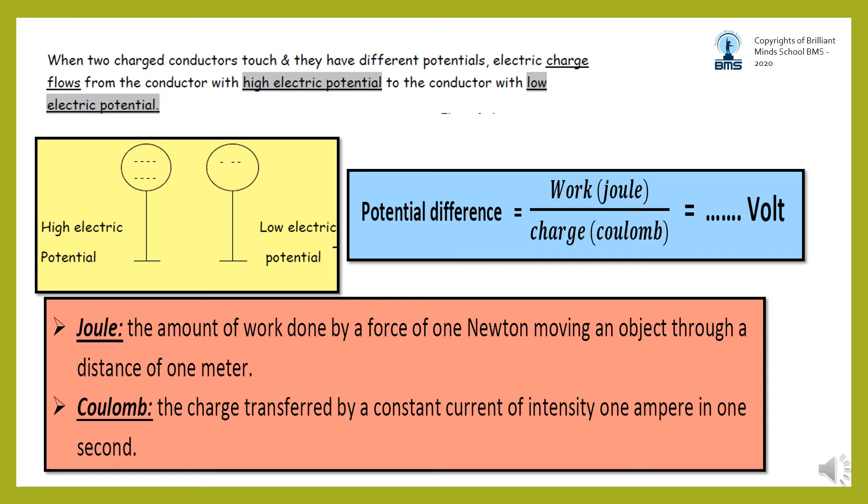Potential difference equals work measured in joule over charge measured in coulomb. The measuring unit of potential difference is volt.